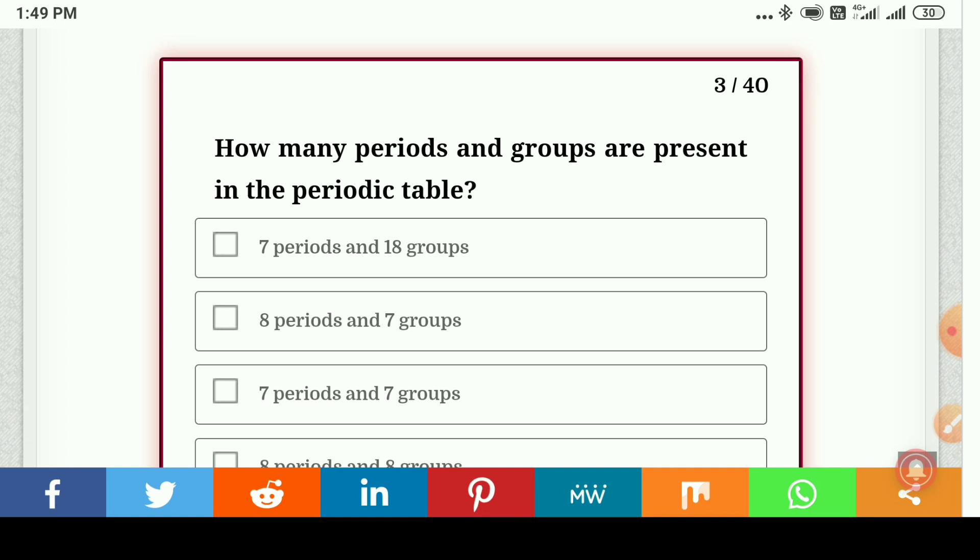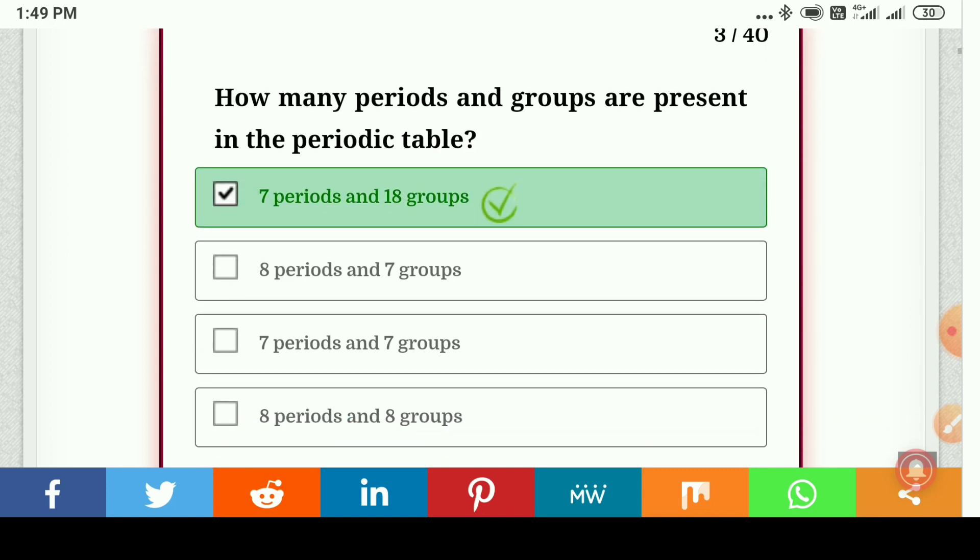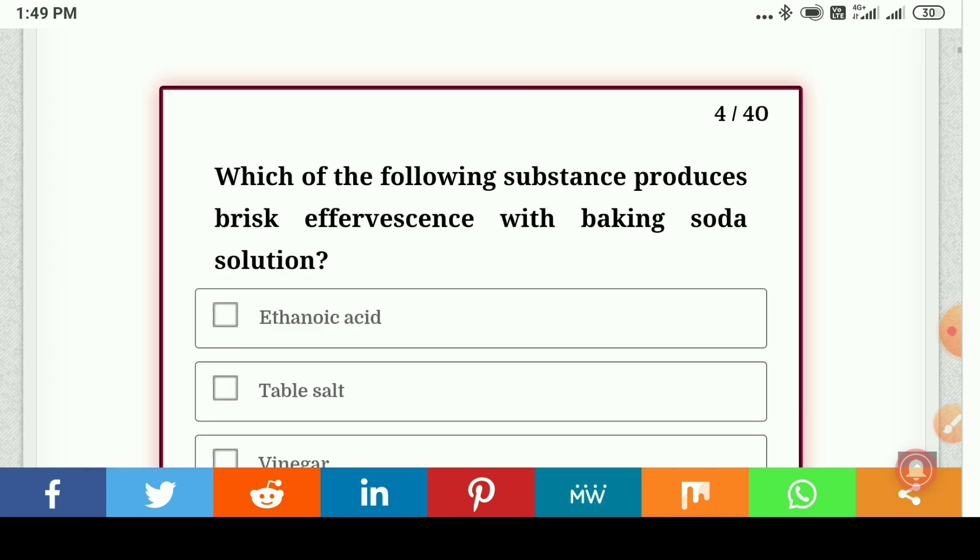How many periods and groups are present in the periodic table? There are seven periods and eighteen groups, so here is the correct answer.